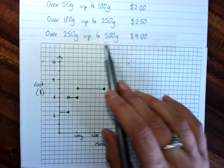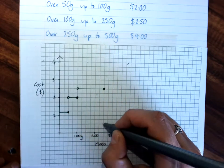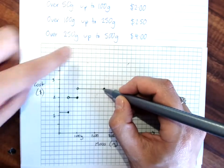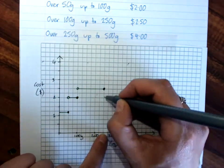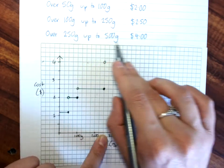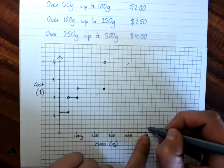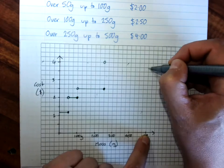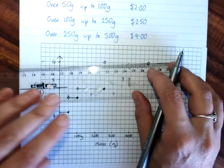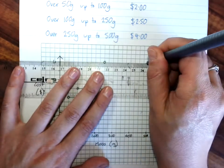And then, over 250, we hit our $4 mark. So, from 250, I go up to $4, up to 500 grams. Take that up to $4. Put my line in.